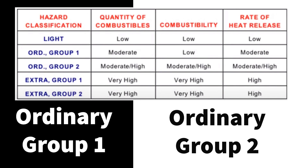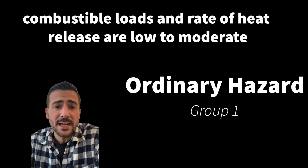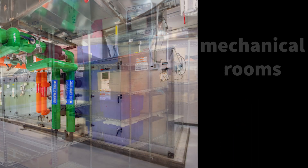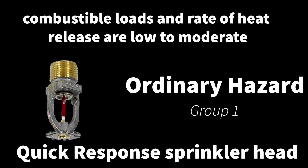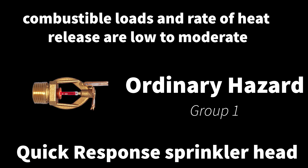Starting with ordinary Group 1: combustible loads and rate of heat release are low to moderate. Some examples are parking garages, kitchens, mechanical rooms, and storage rooms where stockpiles of combustibles do not exceed eight feet. With combustible loads and rate of heat release low to moderate, that gives us the ability to use the quick response fire sprinkler head in ordinary hazard Group 1. This head is going to keep temperatures lower, increasing the chance of survivability and escape, just like we would use it in light hazard occupancy.